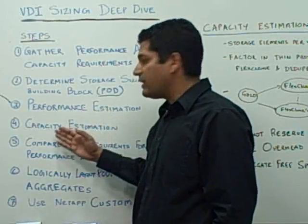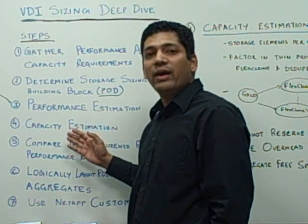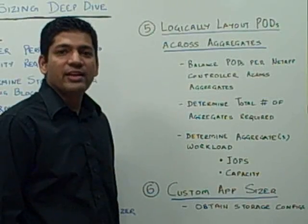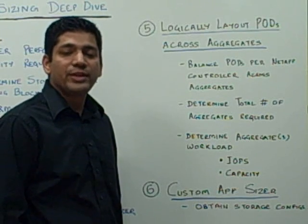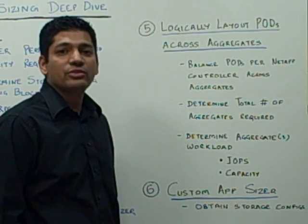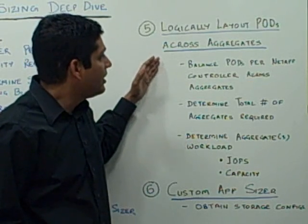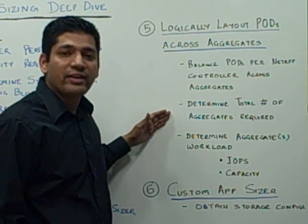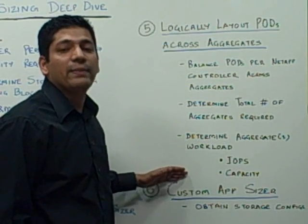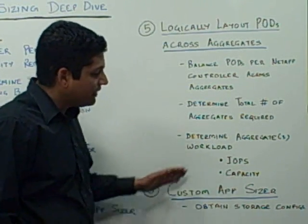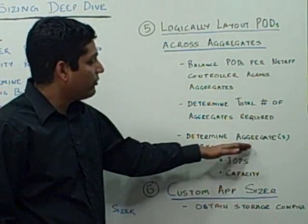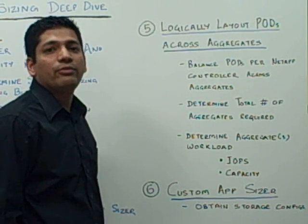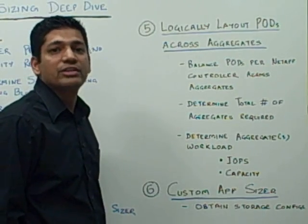By doing both performance and capacity estimation, you determine whether your spindle count is dictated by performance or capacity requirements. Once you have the total spindles required per pod, the next step is to logically lay out the pods across different aggregates — balancing the workload and getting an estimate on total aggregates required along with the IOPS and capacity per aggregate. The last step is to feed these IOPS and capacity requirements into the custom app sizer and obtain the storage system configuration: the type of storage controllers required and the total number of disk shelves.